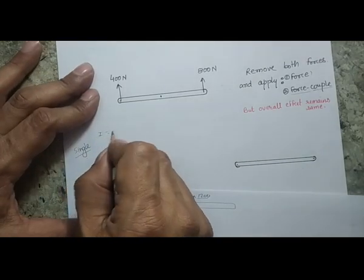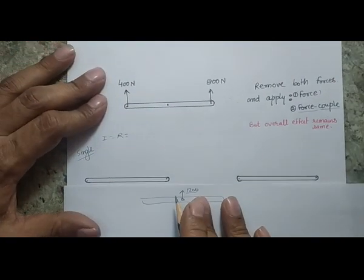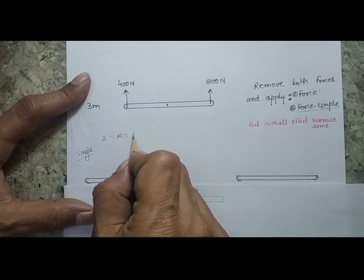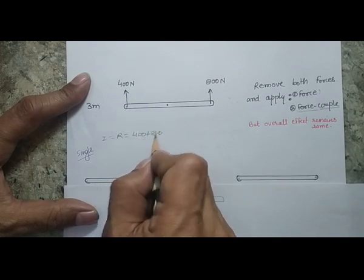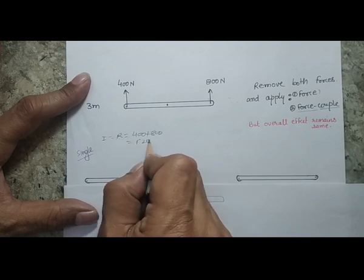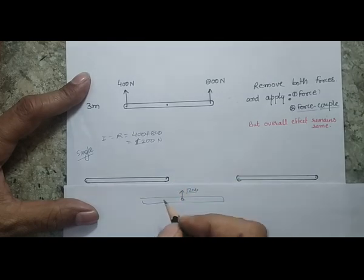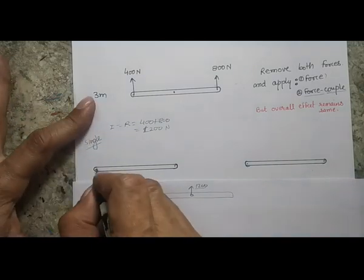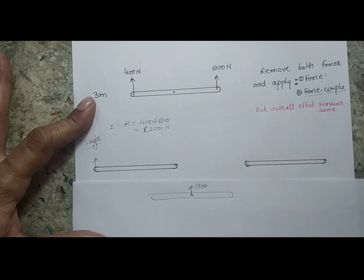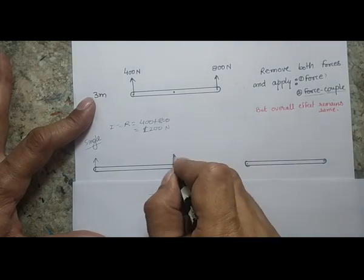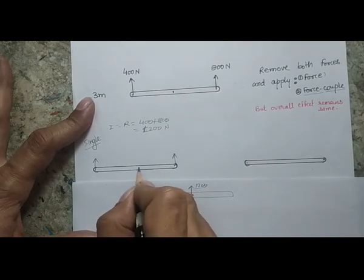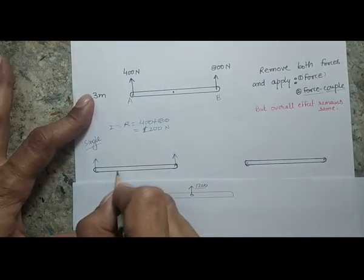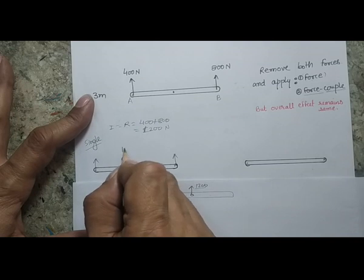The first job is to find the resultant. As both forces act in the upward direction, the net resultant force is the summation: 400 plus 800, so my resultant force is 1200 Newton. But where do I place this 1200 Newton force? I need to consider the system with the two original forces alongside the resultant force, and assume the resultant force is acting at a distance x from end A.